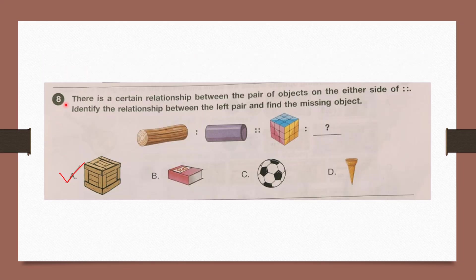Question number 8: There is a certain relationship between the pair of objects on either side of the double colon. Identify the relationship and find the missing object. Here it is a log — cylindrical. This is also cylindrical. This is a cube, so this should also be a cube. Option A is a cube. So our answer is option A.